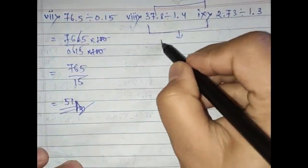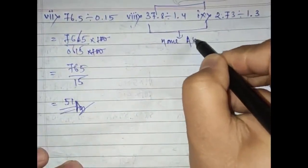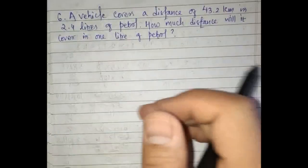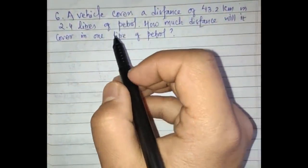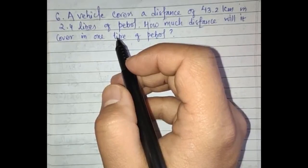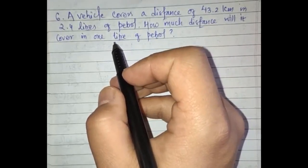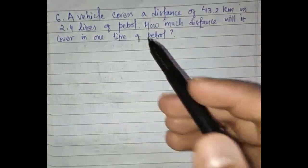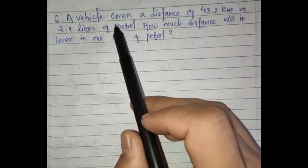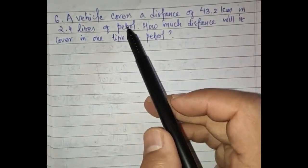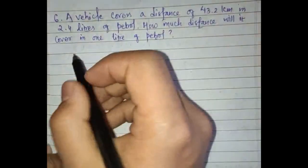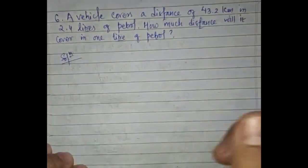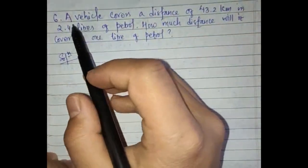Questions number eight and nine I want you to do yourself — this will be a home assignment. It is very easy, just do it. Moving on to question number six, which is the last question of exercise 2.7 and also the last question of the chapter. I want you all to practice a lot so you will be very familiar with this chapter and get proper marks.